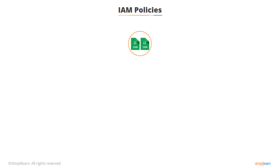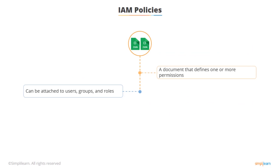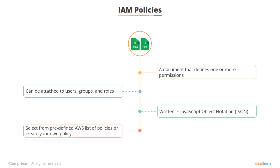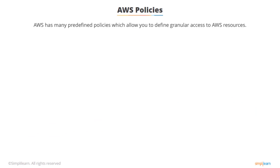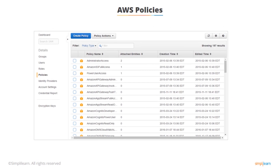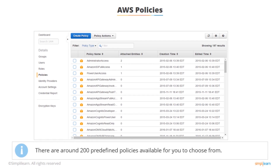So what are IAM policies? A policy is a document that defines one or more permissions, and policies can be attached to users, groups, and roles. They're written in JSON – JavaScript Object Notation. There are many policies that AWS has predefined which you can select from, or you can create and edit your own. AWS has around 200 predefined policies available that allow you to define granular access to AWS resources.